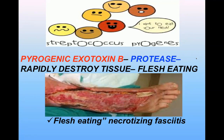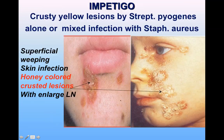Exotoxin B is a pyrogenic toxin and a protease that rapidly destroys tissue, with hollow areas visible in the affected tissue. It is also known as the flesh-eating toxin and the condition it causes is known as necrotizing fasciitis.